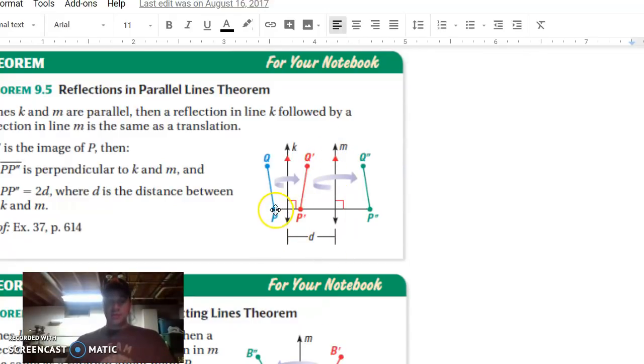is that the total distance from any point—for example, in this diagram, point P to point P double prime—that distance is going to be twice as much as the distance in between the two parallel lines that you had reflected over. So if this distance here from this line K to this line M was, let's say, two inches, then we can know for sure that P to P double prime is going to be a total of four inches. That is Theorem 9.5, so let's put Theorem 9.5 into practice.